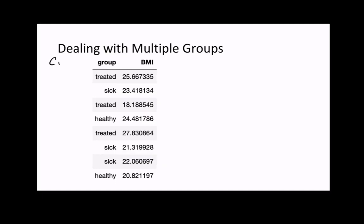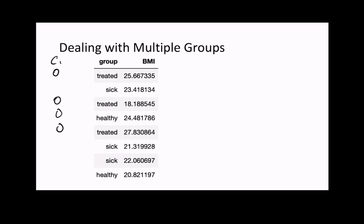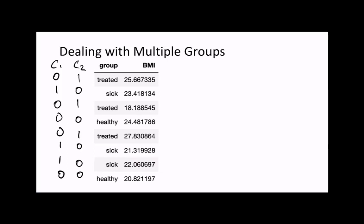To encode these contrasts in a form the computer can understand, we can represent these variables as 0s and 1s. For contrast C1, we place a 0 for patients not in the disease group without treatment, and a 1 if they are. Similarly, for contrast C2, we place a 0 for patients not in the disease group with treatment, and a 1 if they are. From the previous example, we need to have an intercept—denoted by a column of 1s—giving us three terms: beta0, beta1, and beta2.